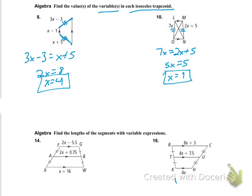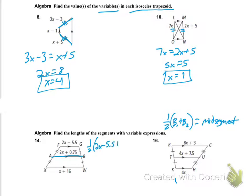For number 14, this is where we get into an equation we have to remember: one-half times (base one plus base two) is equal to the mid-segment. Our mid-segment for problem 14 would be AB, which equals 2x plus 0.75. So I set up: one-half times (2x minus 5.5 plus x plus 16) equals 2x plus 0.75.